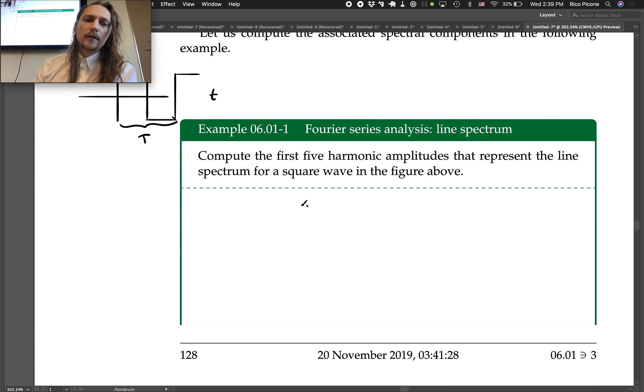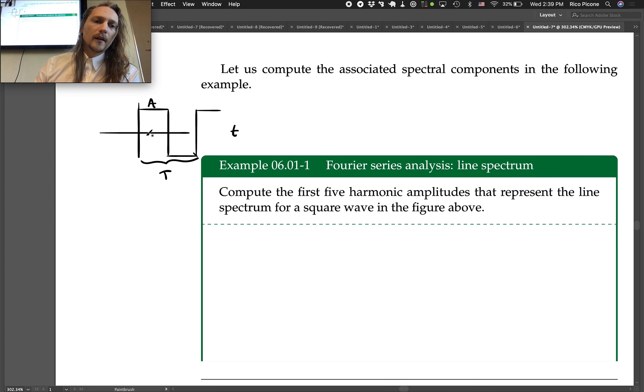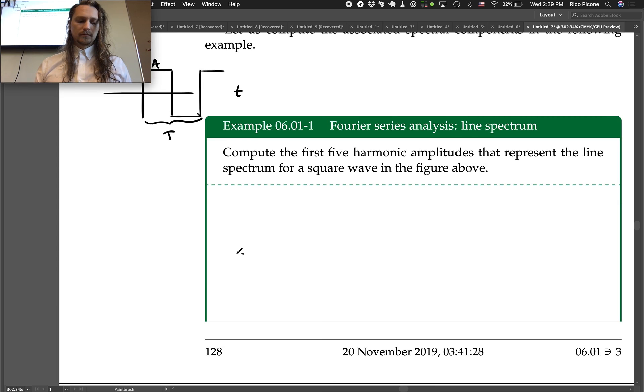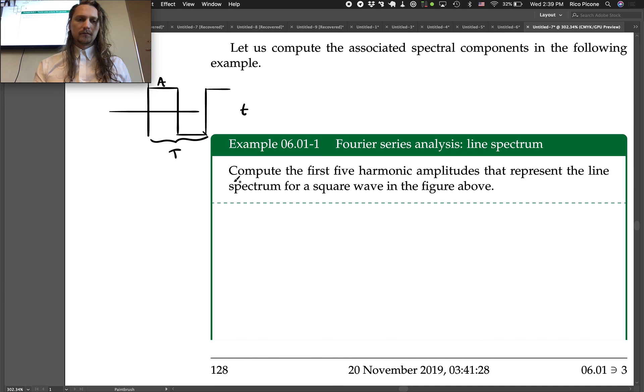Consider a square wave with amplitude A and period T. Let's actually just say A equals 1. So let's compute our Fourier coefficients.